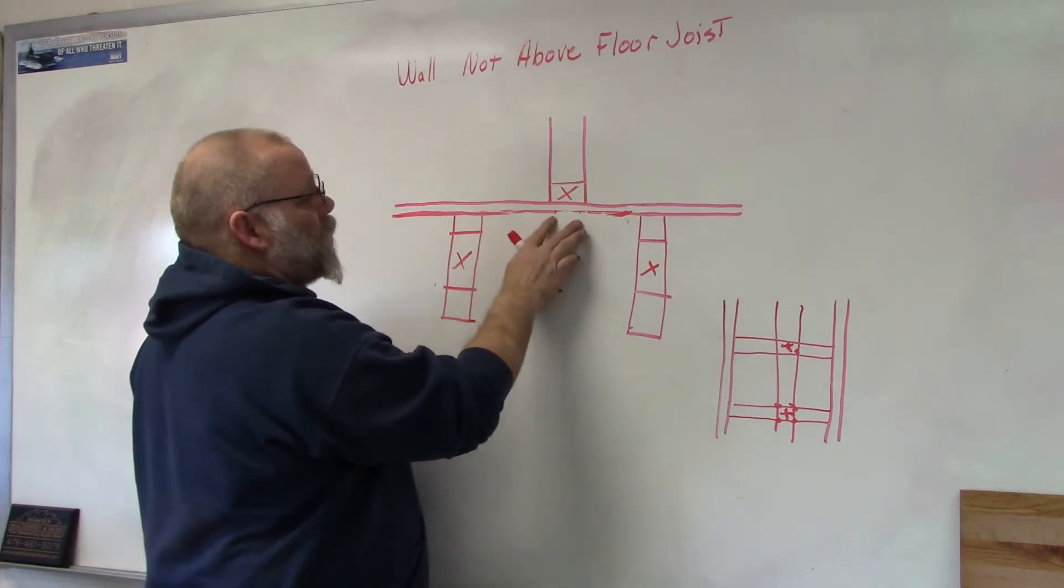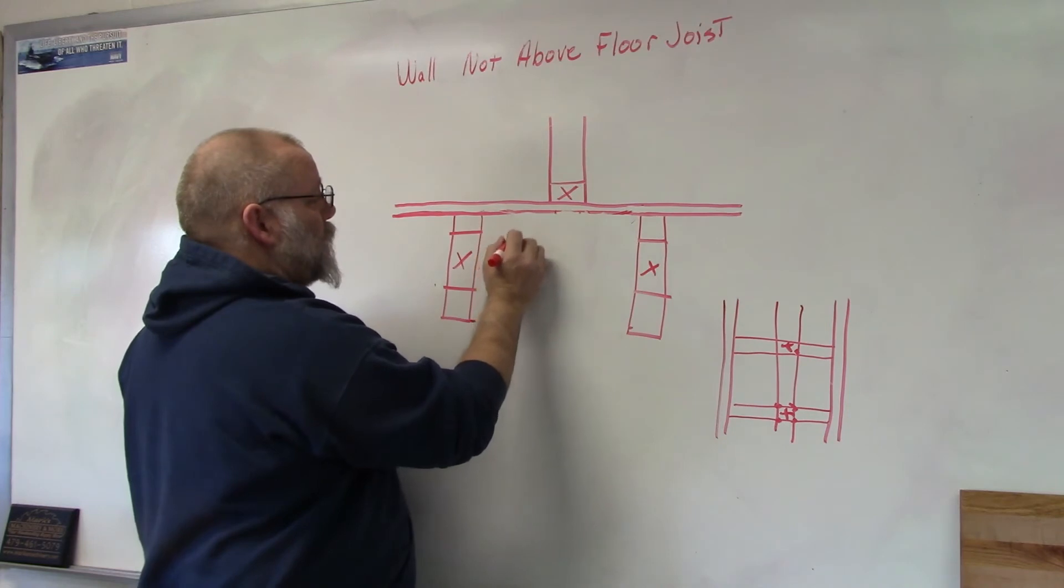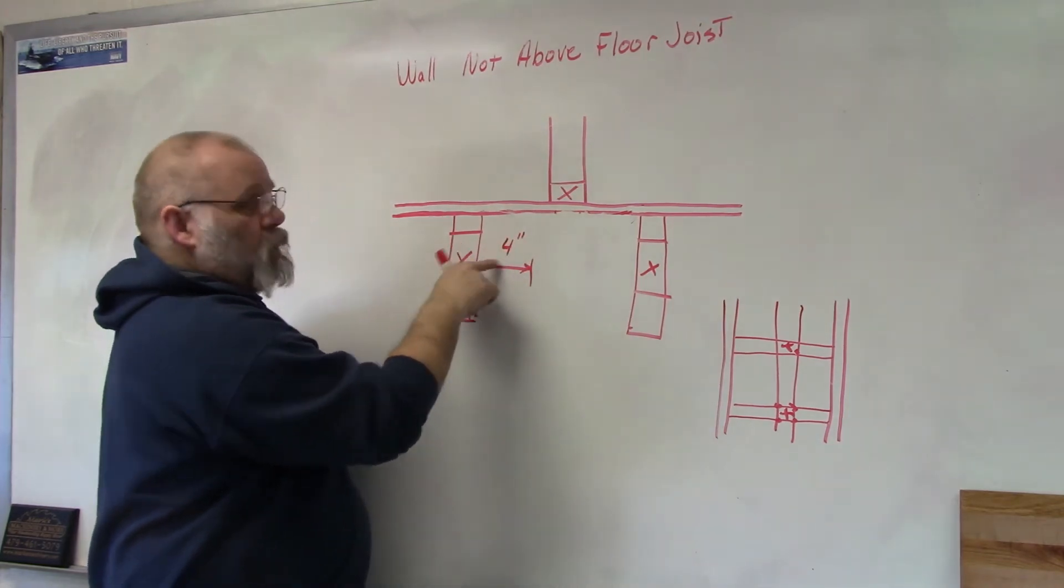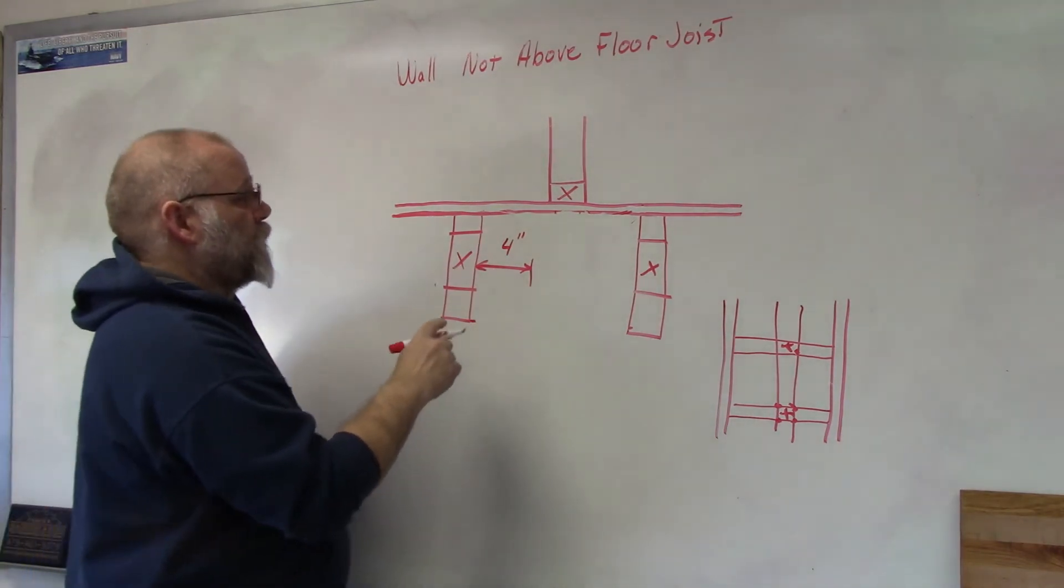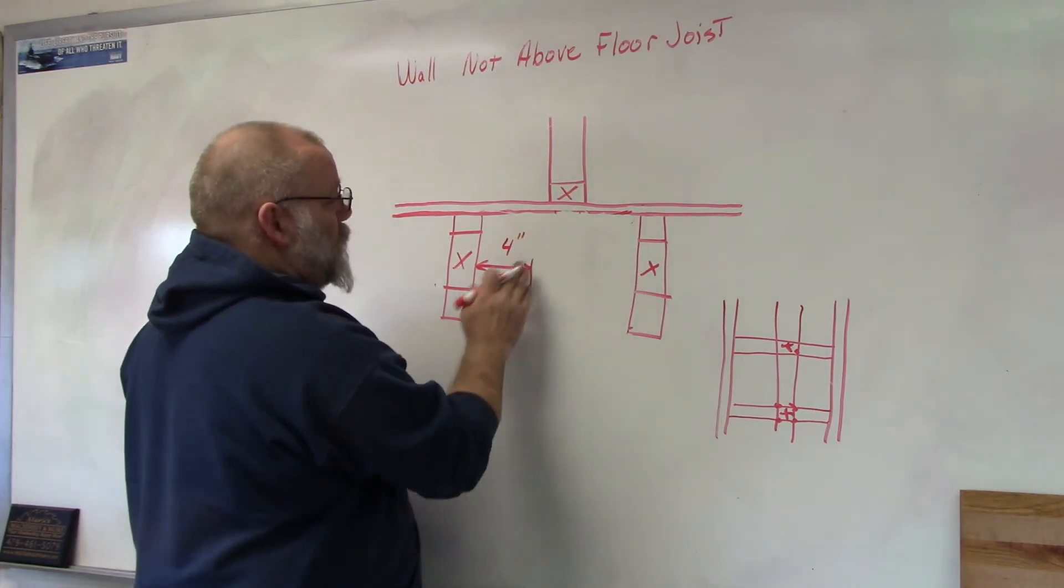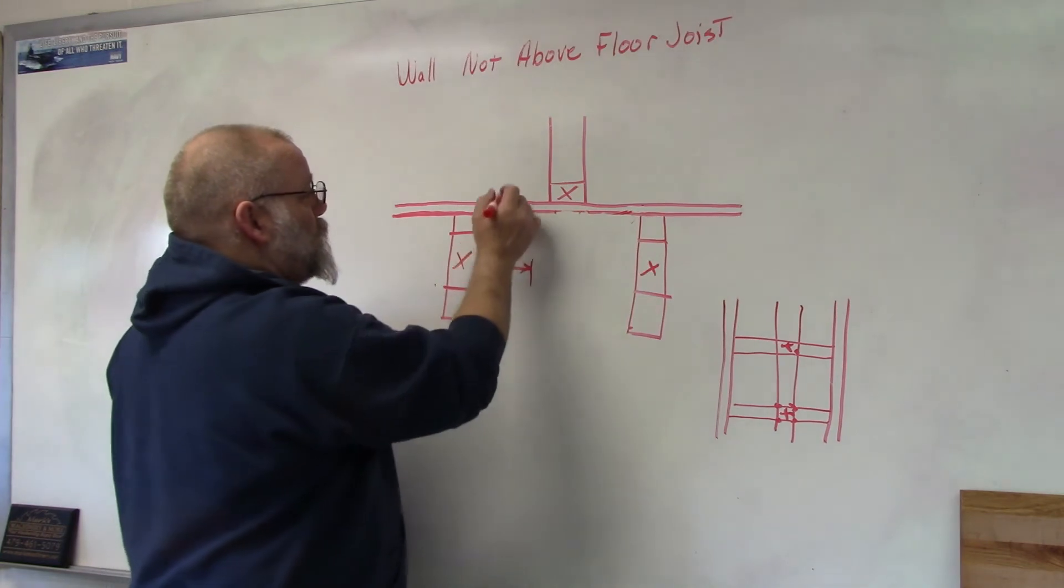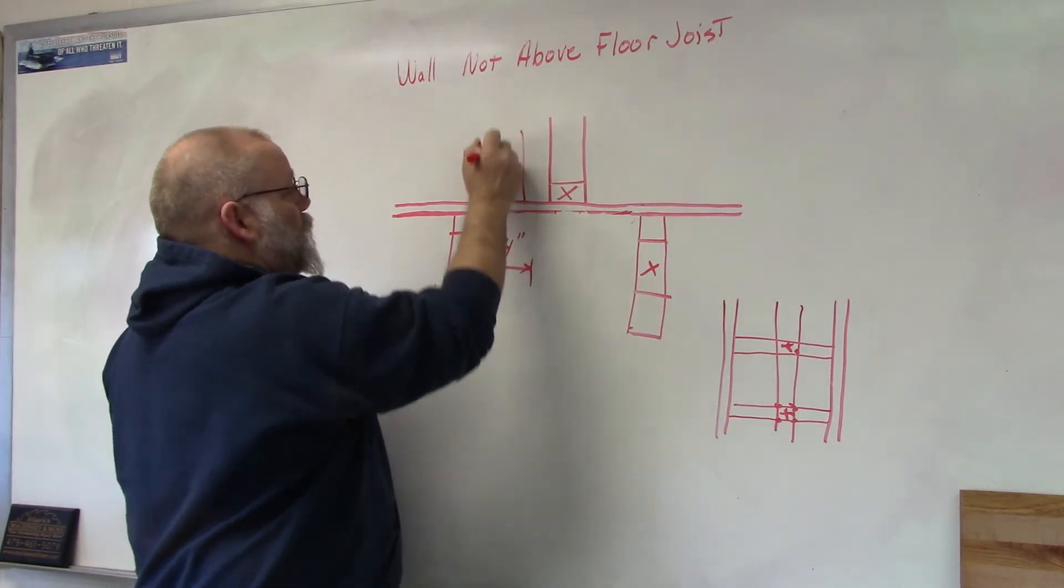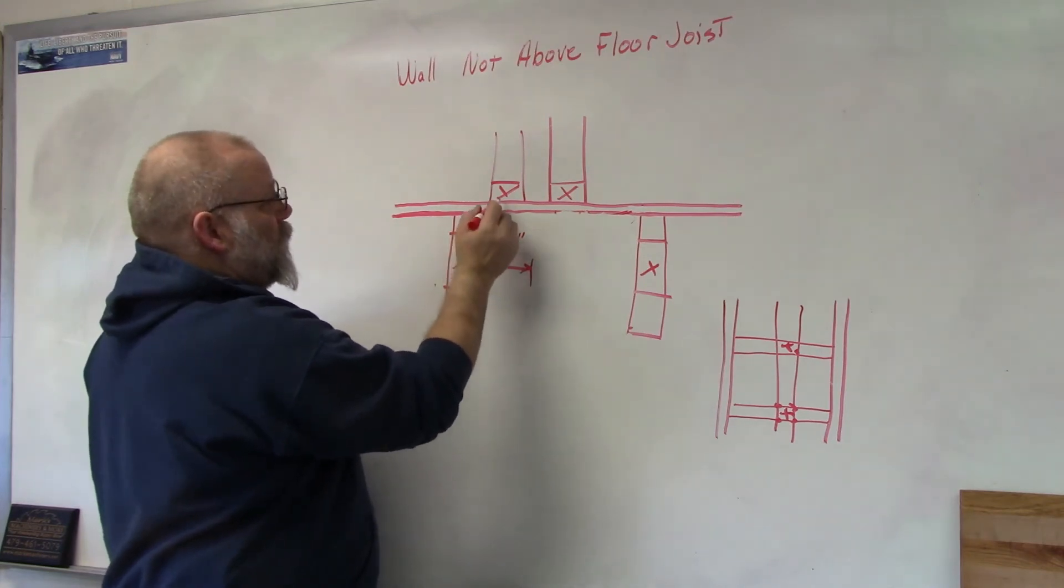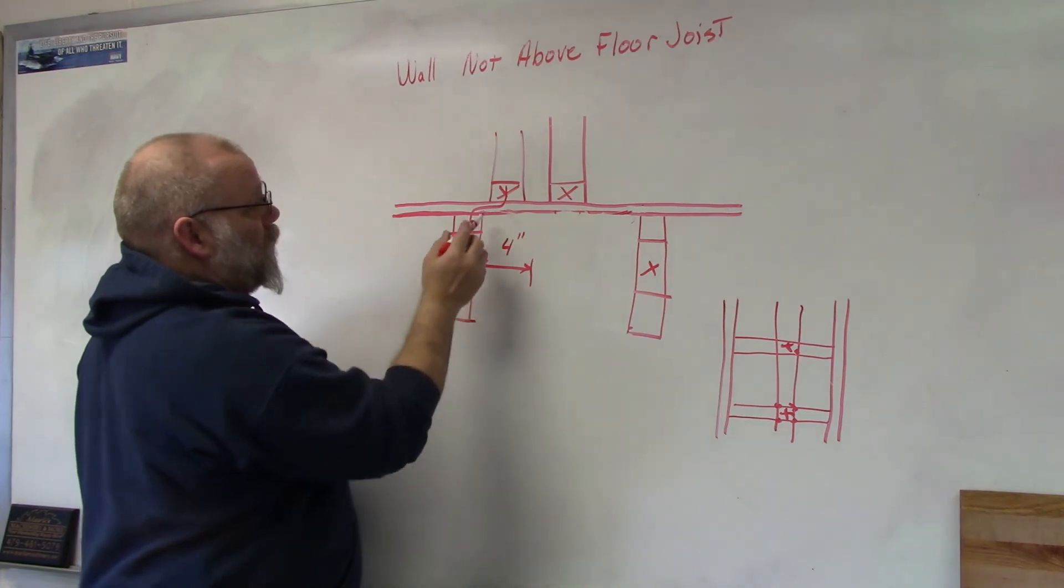Now how do you determine whether this needs to be reinforced or not? Code says that the distance from here should not exceed four inches. So if it's over four inches from one of the two floor joists, then you have to reinforce it. If it's less than four inches, say if the wall was sitting over here, then I would not have to reinforce this because the load is being transferred more almost directly to there.